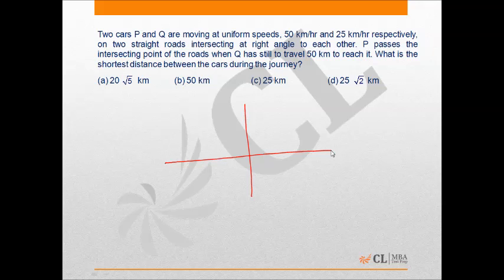The situation is like this: if P is moving along this road then Q is moving along this road. P passes the intersecting point of the road when Q has still to travel 50 kilometers to reach it, which means when P is there, Q is still 50 kilometers away from this point.